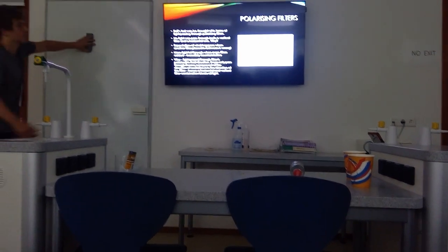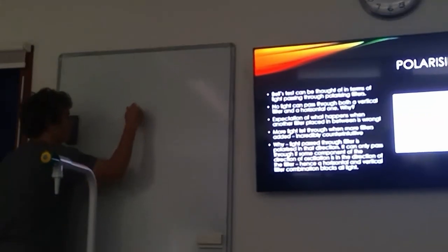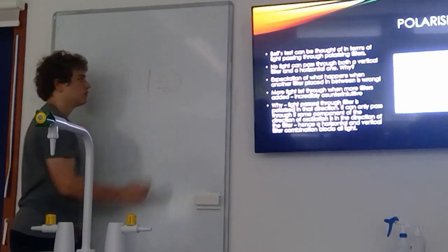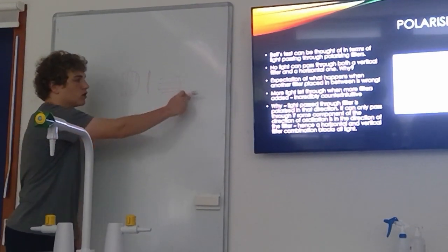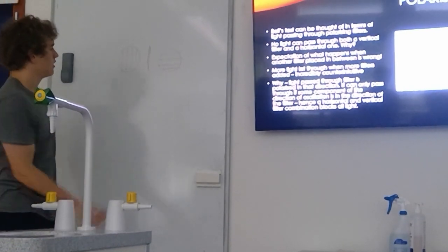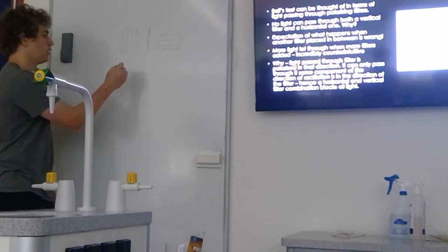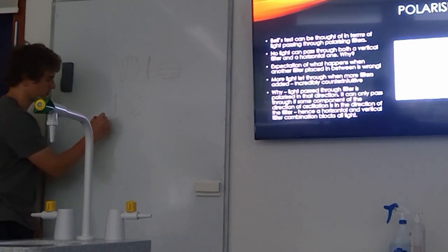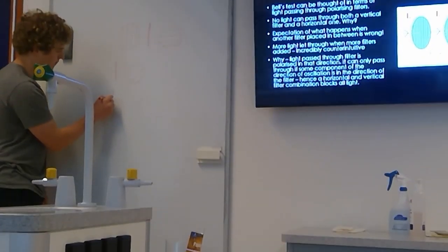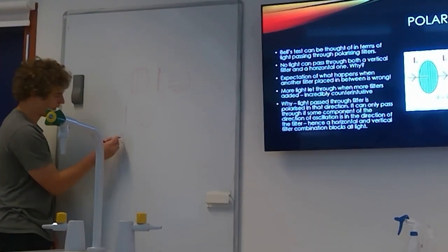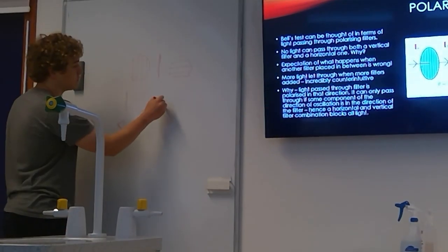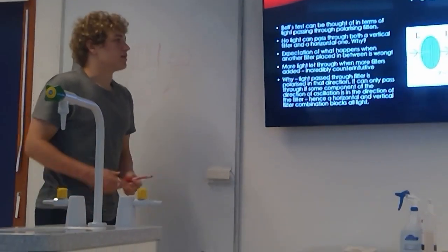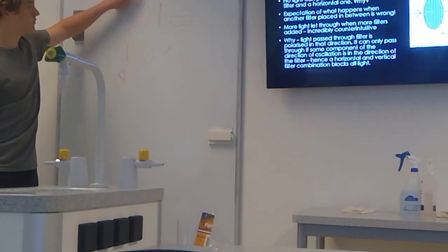We know that if we pass light through a vertical filter, it's only going to be oscillating vertically. And so if we then pass it through a horizontal filter, no component of this oscillation is in a horizontal direction, so no light is going to come out. If we have this vertical wave organised by this filter and you pass it through a filter at 45 degrees, well then some component of this — you can think of it as being in this direction — so some of it, but just less, will come out the other side. The interesting thing is that when you have a vertical and horizontal filter, no light comes out the other side.